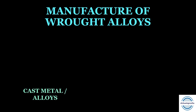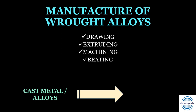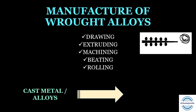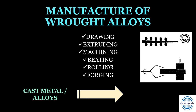Now let us understand the manufacture of wrought alloys briefly. These wrought alloys are usually derived from cast metal or alloys. These cast metals are subjected to various deformative processes like drawing — from which round wires are obtained — extruding, machining, beating, and rolling. The rolling process is used to form sheets and rods. Forging is a process by which stainless steel crowns are obtained — another MCQ point. All these processes apply a tremendous amount of stress, known as work hardening, resulting in the manufacture of wrought alloys.